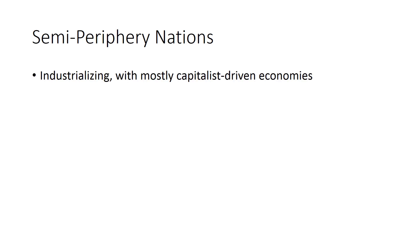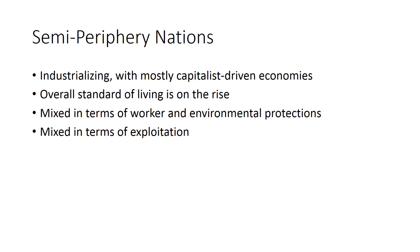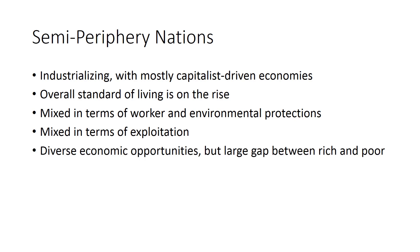Semi-periphery countries are somewhere in the middle. They typically are industrializing with mostly capitalist-driven economies. Their overall standard of living is on the rise, though not typically as high as the more affluent core nations. They typically have a mix in terms of worker and environmental protections, and they show a mix in terms of exploitation — they are able to exploit others while in other ways they are themselves exploited. While they offer a fairly diverse array of economic opportunities to their citizens, there is in semi-periphery nations a very large gap between rich and poor. Theoretically, they stabilize the world system by providing a sort of bridge between core and periphery countries in terms of overall global trade.